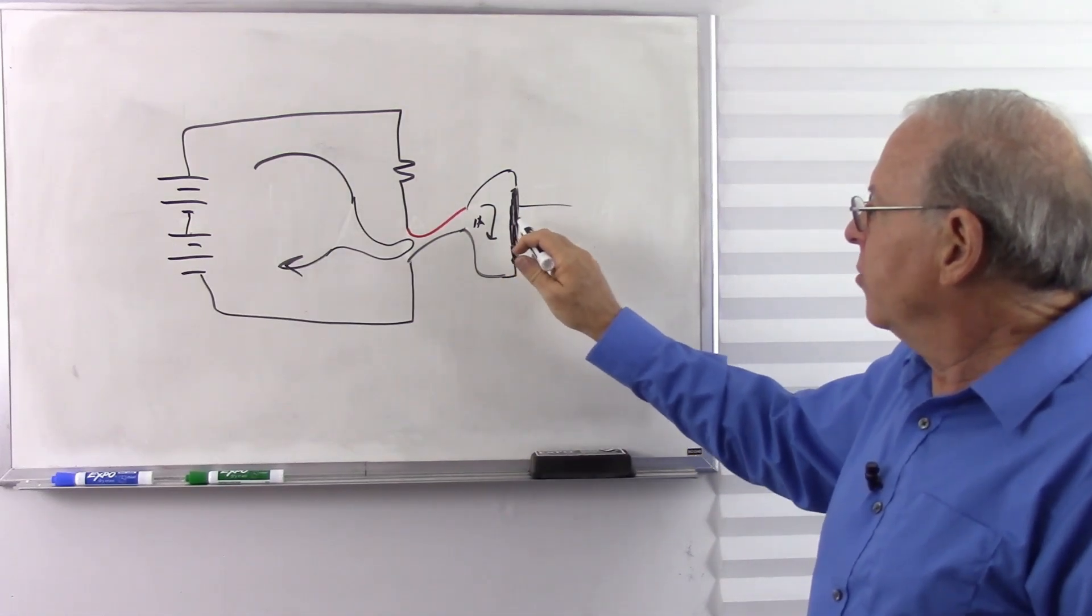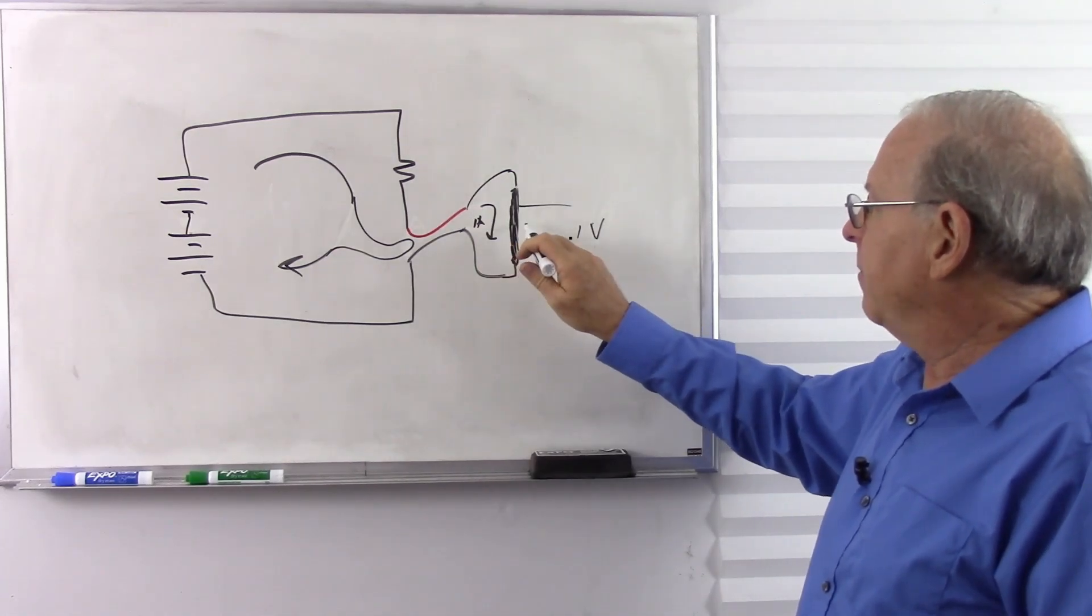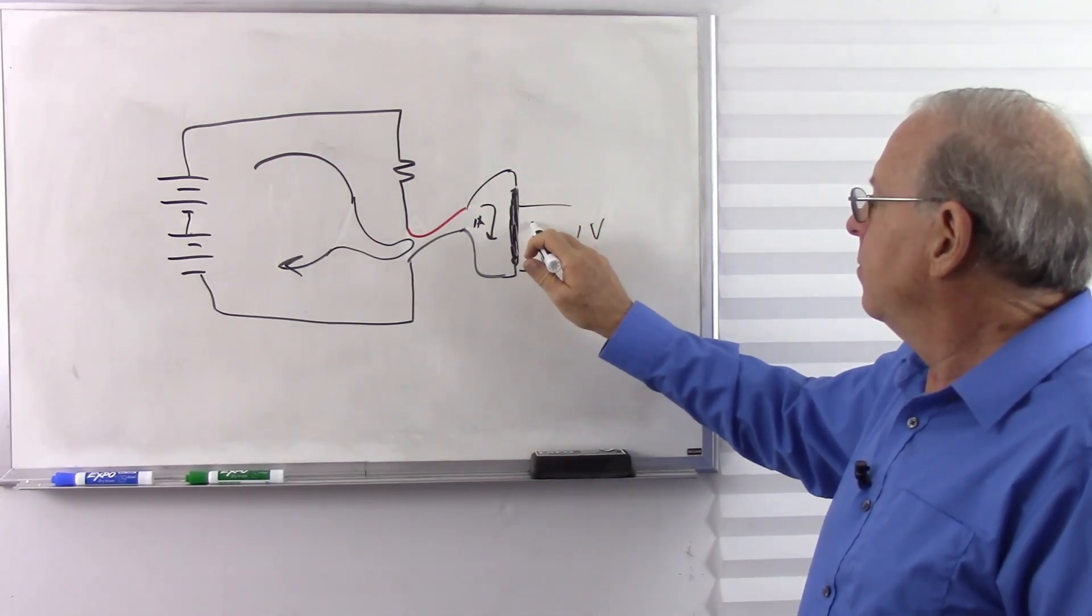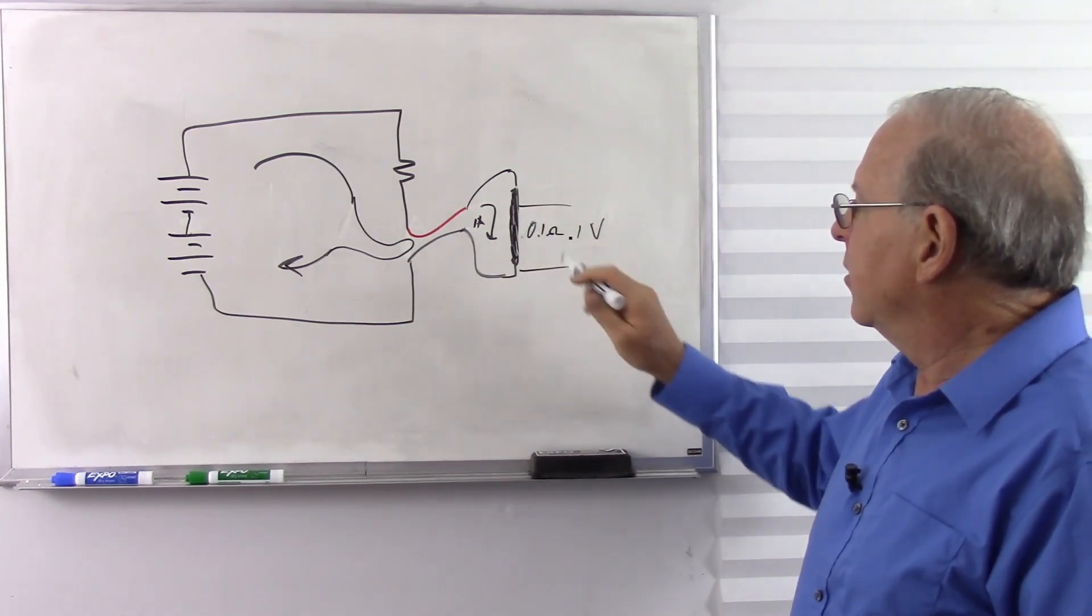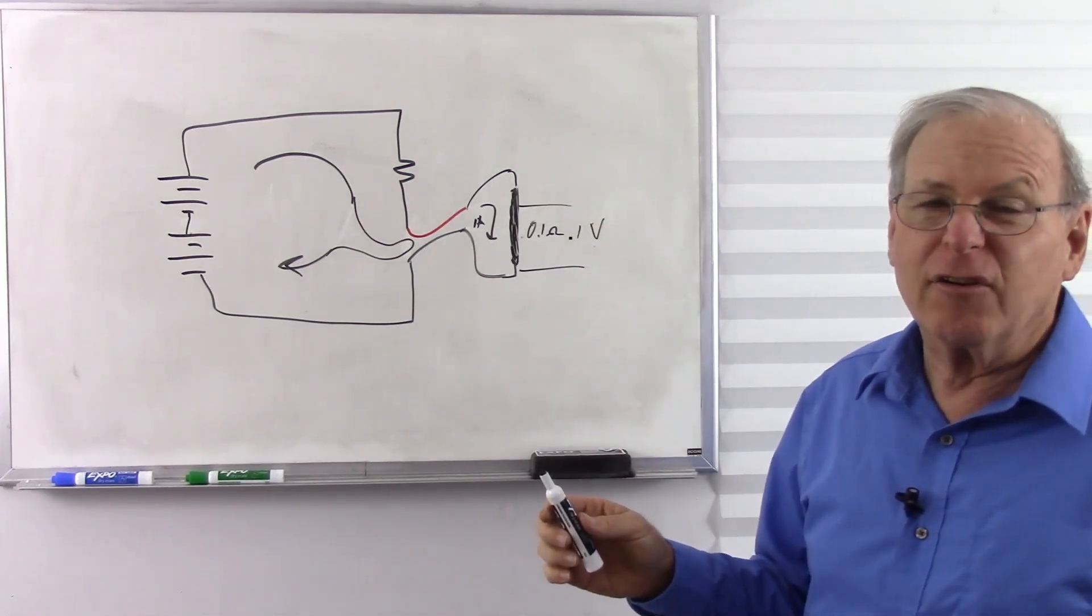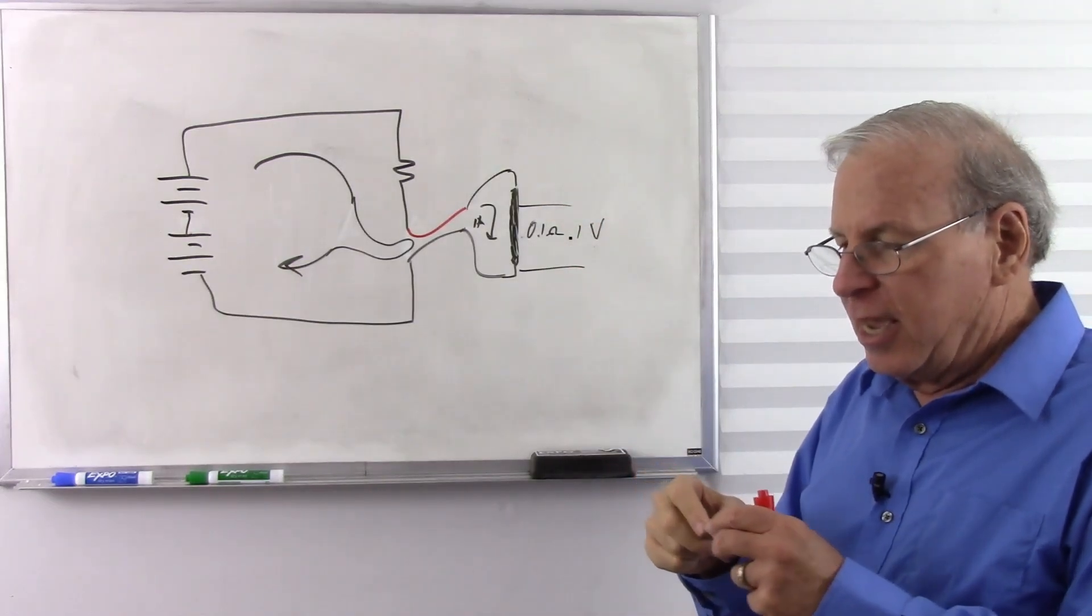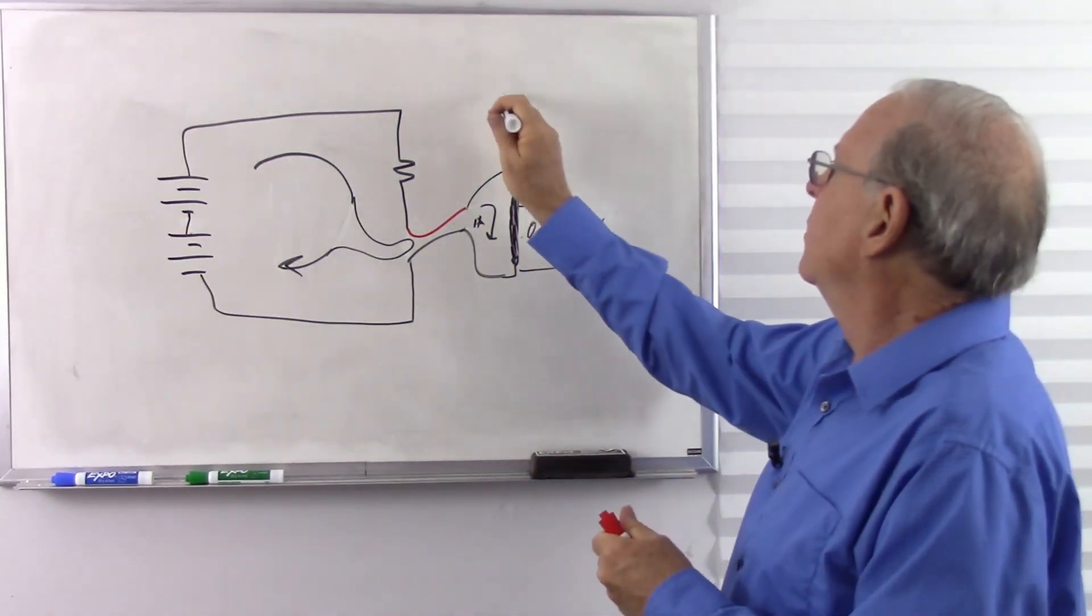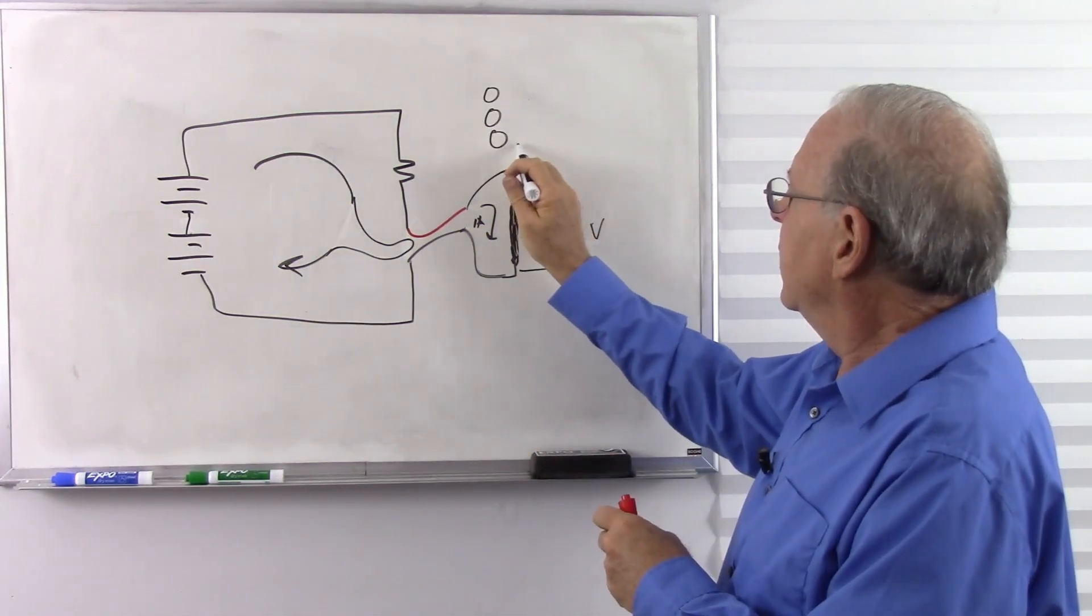And it's a known resistance. So let's say we get 0.1 volt with one amp. That means that's going to be 0.1 tenth of an ohm. So it's going to be a very low resistance, probably lower than that, probably maybe a hundredth of an ohm or something like that. And we measure the voltage across there to get our current.